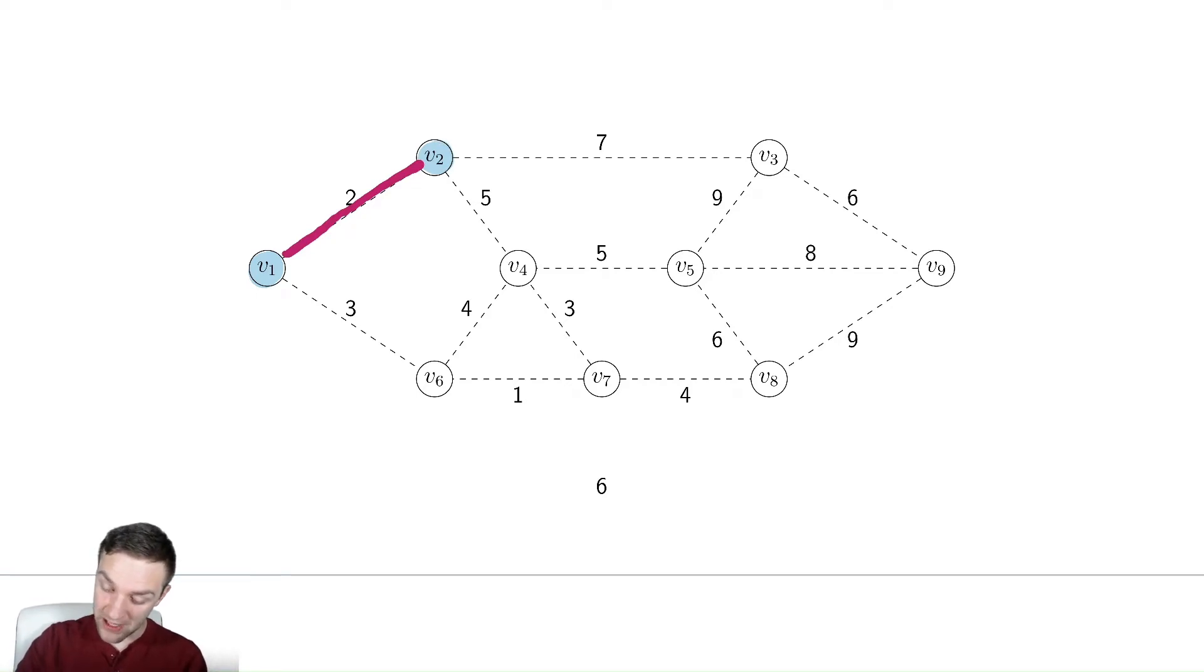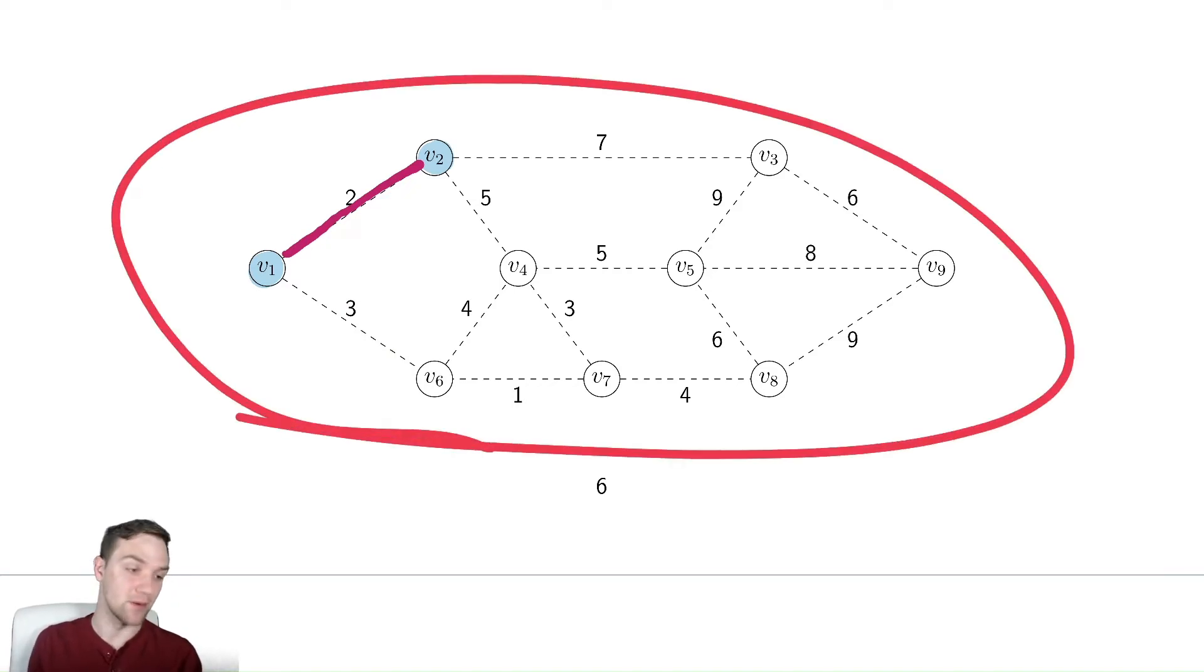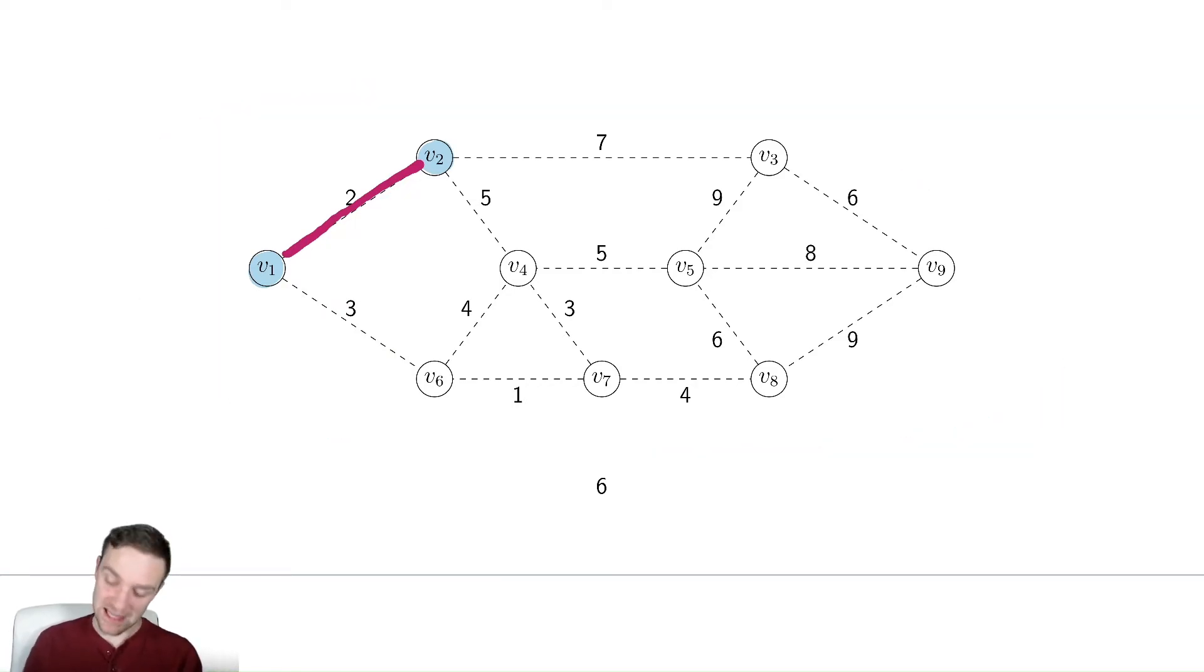Now we need to check all the edges. We have seven, five, and three. For the algorithm though, it doesn't necessarily know that it doesn't need to check all those edges, so it's going to check every single edge of the graph every time. We don't need to do that thankfully by hand.